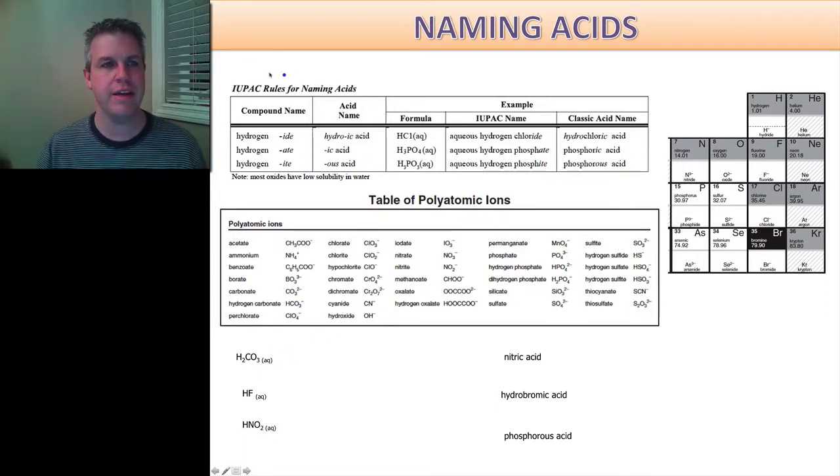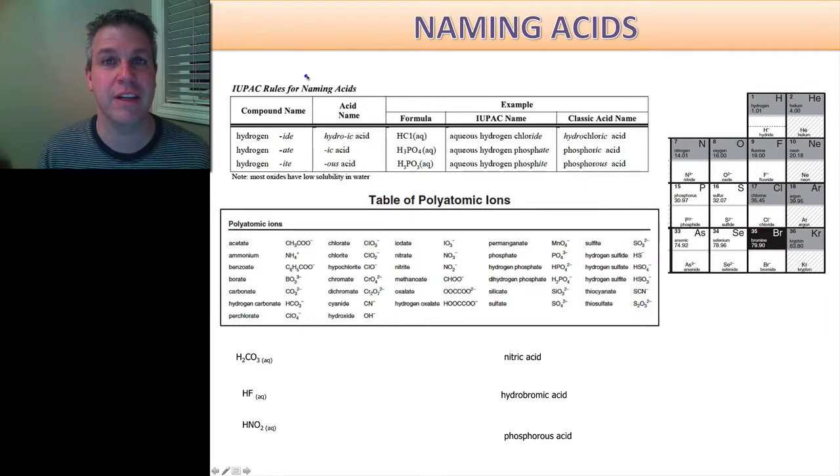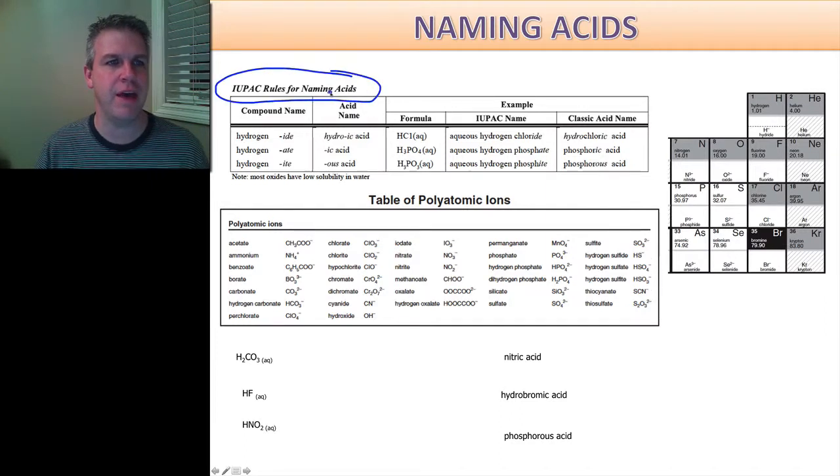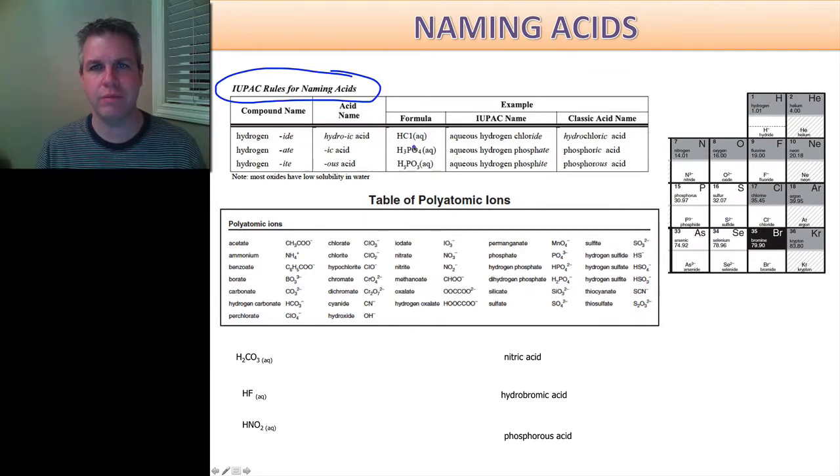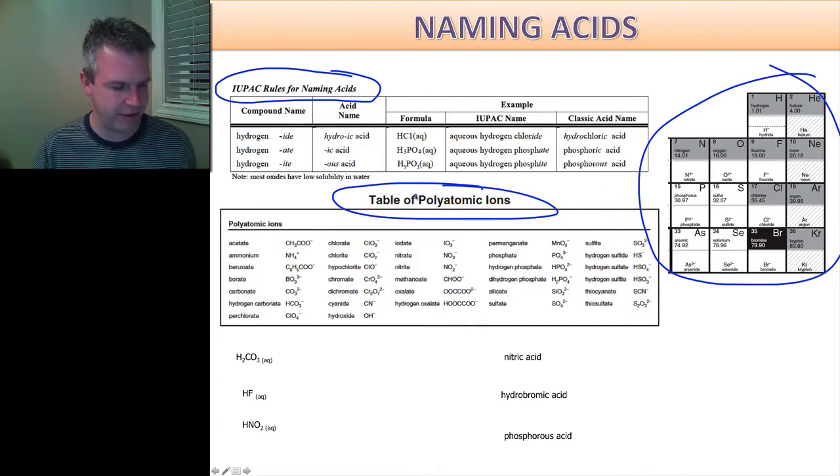So what I've done is I've taken a number of pieces from our data booklet that we have in class. One of the things that makes it really very lucky for students taking chemistry in my class is that we have the IUPAC rules for naming acids built right into our data booklet. I've taken that and posted that here. I also have taken the table of polyatomic ions off of your data booklet and just a snippet of the top right-hand corner of your periodic table because I'm going to be using it in these examples.